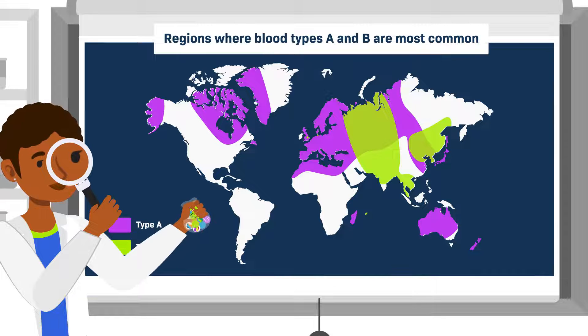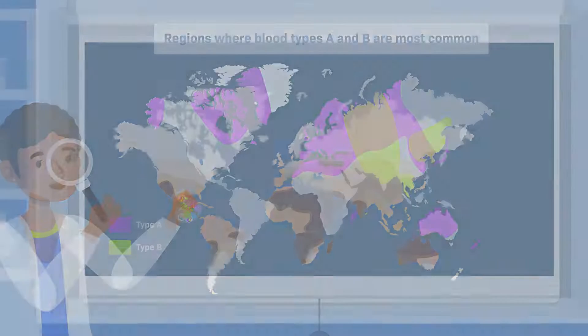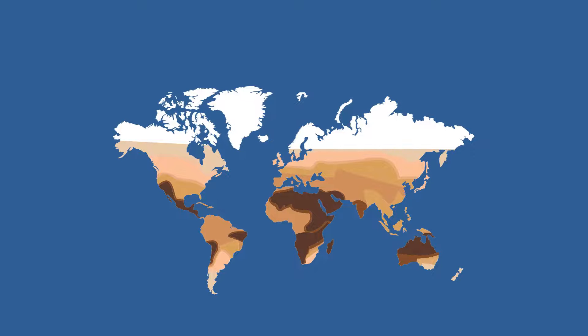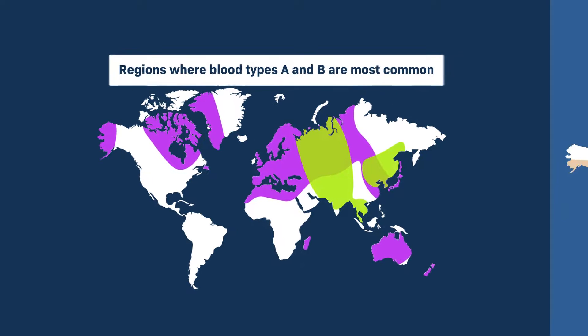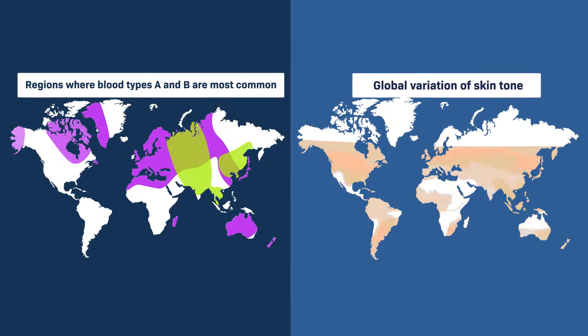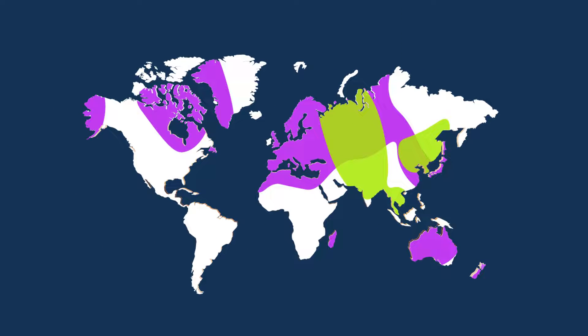If humans did inherit a package of biological traits according to the race they were perceived as, you could expect to see some sort of relationship between the geographical distribution of skin tones and the geographical distribution of blood types. But these maps show no relation at all. Instead, it's clear that there is a drastically different geographical distribution of A and B blood types and the distribution of skin tone.